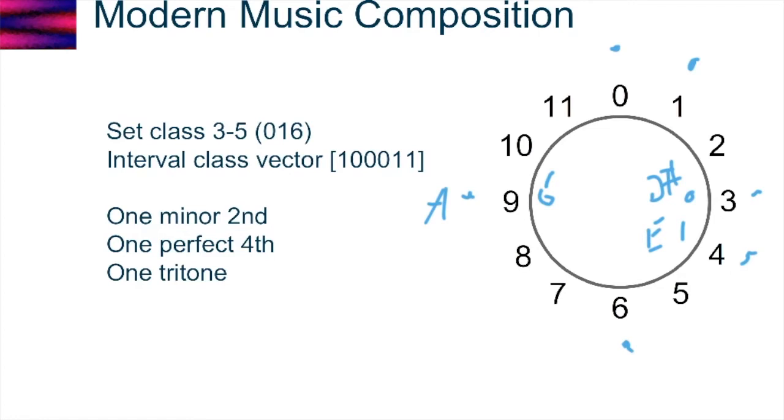So set class 3-5 has what's called an interval class vector. And all an interval class vector is is it maps out all the intervals associated with that particular set class. The way it works is the first column is a minor second. The second column is a major second. And then it marches across semitone by semitone. You have the minor third, major third, perfect fourth, and a tritone. And also all the inversions, too. So with respect to this set class, we've got one minor second, one perfect fourth, and one tritone. So if I have 0, 1, and 6, you can see the 0 and the 6 represent the tritone. The 0 to the 1 represents the minor second. And then the 1 to the 6 represents the perfect fourth.